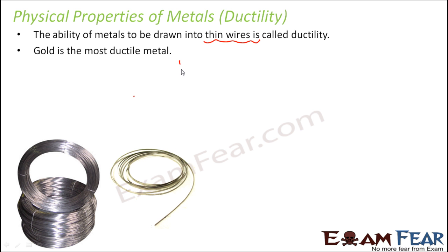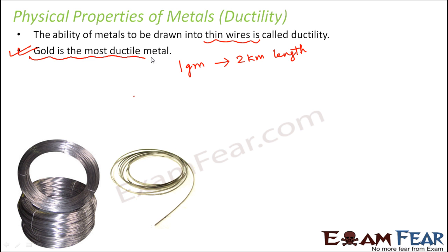If you take 1 gram of gold, you can draw it to form a wire which is 2 kilometers in length — just imagine how long that is going to be. And that is why gold is said to be the most ductile metal. Gold has the highest malleability and the highest ductility, and that is why it is used for designing ornaments.